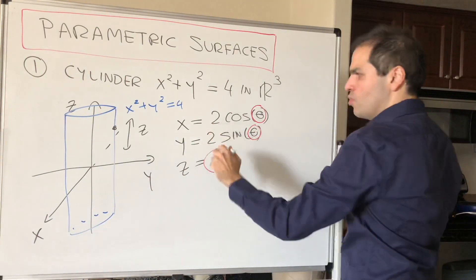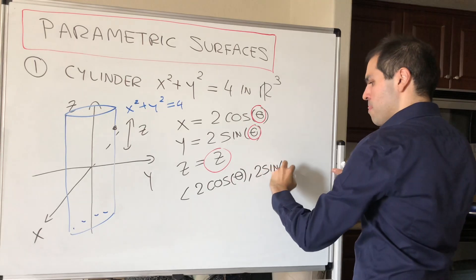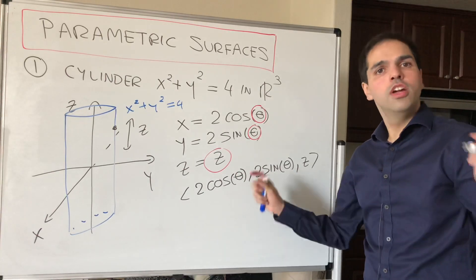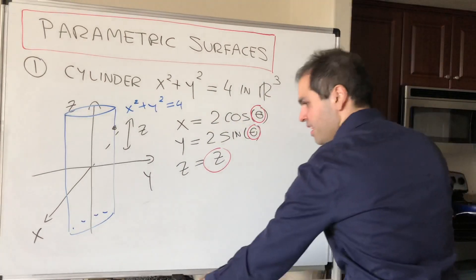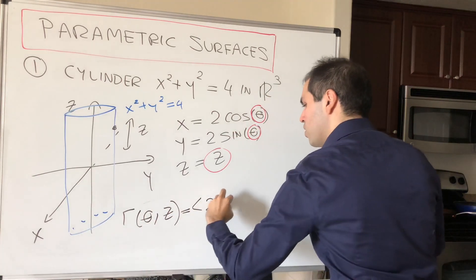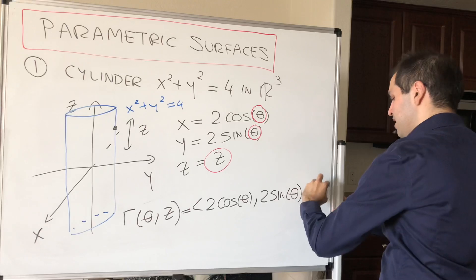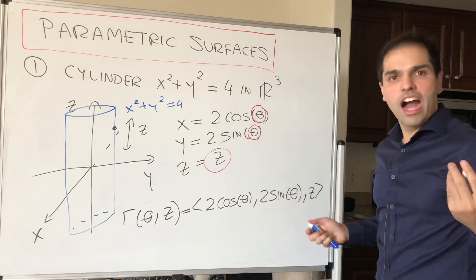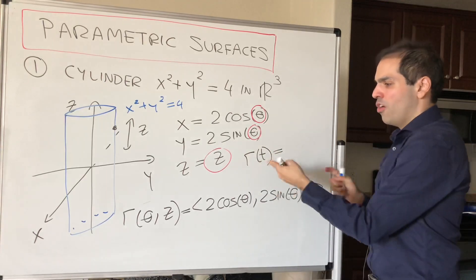And the cool thing is we can describe this more compactly as a vector. Namely, you can just write the vector 2 cosine theta, 2 sine theta, and z. And that is sort of a description vector which we call r theta z. So r theta z would be 2 cosine theta, 2 sine theta, and z. And that is what's called the parametric equation of this surface.